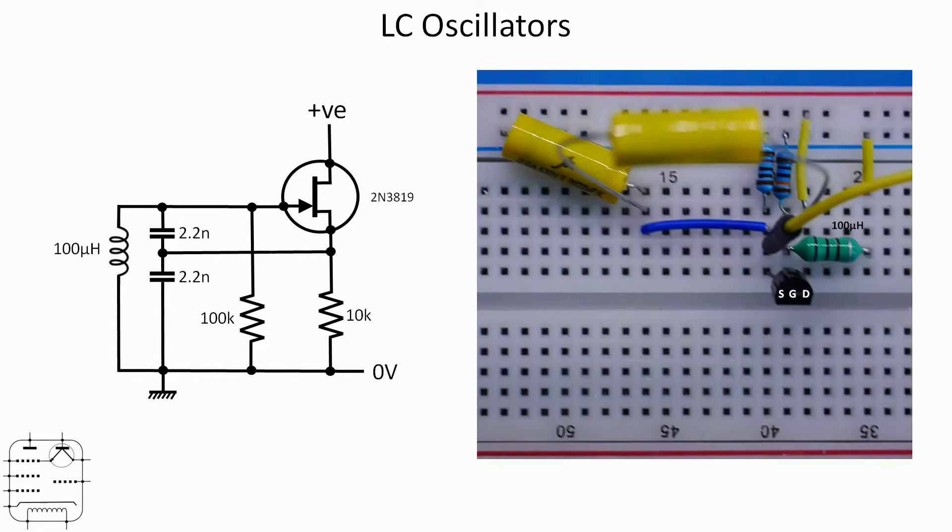That's the general arrangement. Let's have a quick look at one of those on the breadboard. It's incredibly straightforward. Apologies, the two 2.2 nanofarad capacitors - the only ones I've got were actually quite high voltage, which is why they're so large. But the two capacitors are the two big yellow components, the 100 microhenry inductor is the greenish component at the bottom there. You can see the MOSFET - I've marked up source, gate and drain for you. There's the two resistors and the yellow fly lead is going to the scope so that we can look at the output.